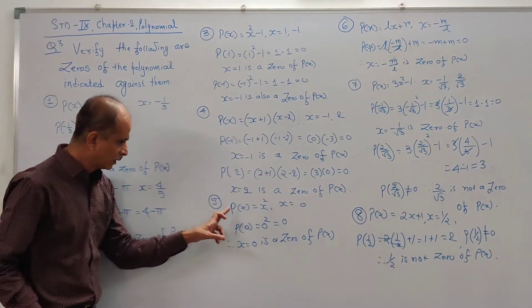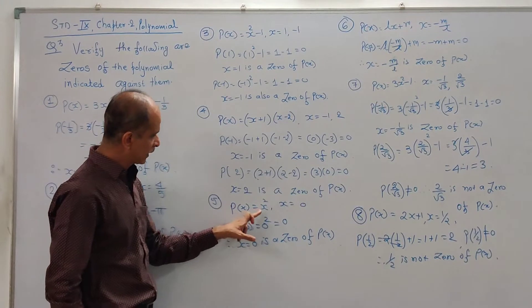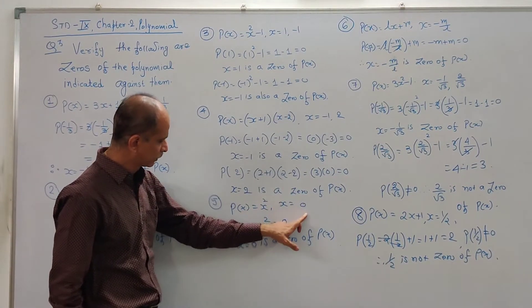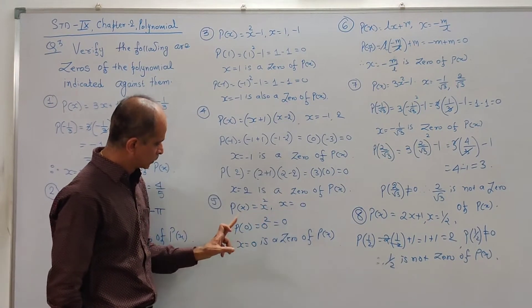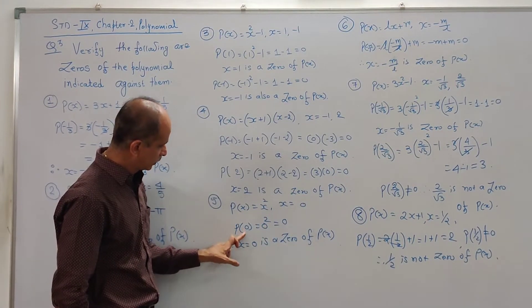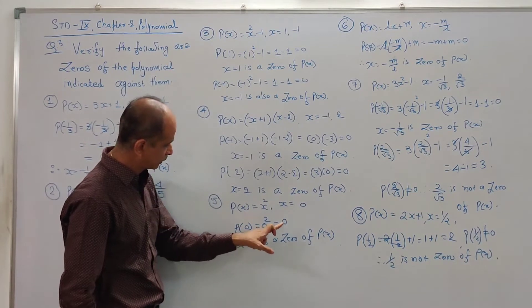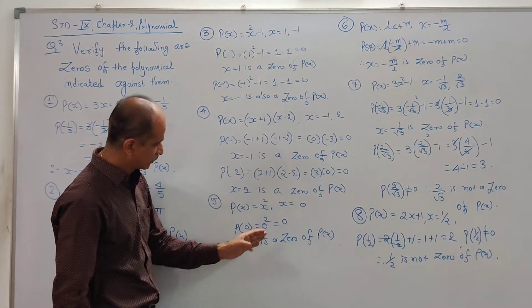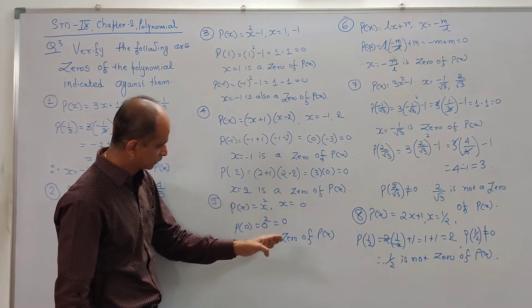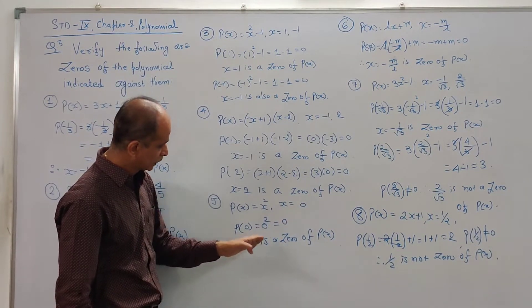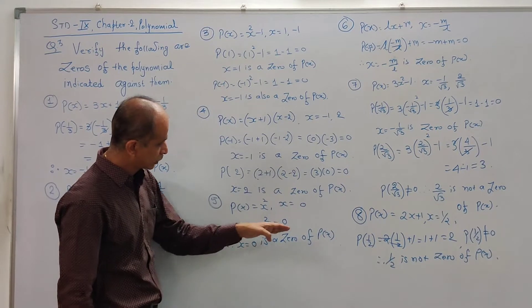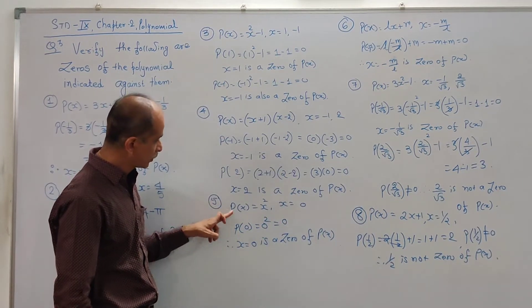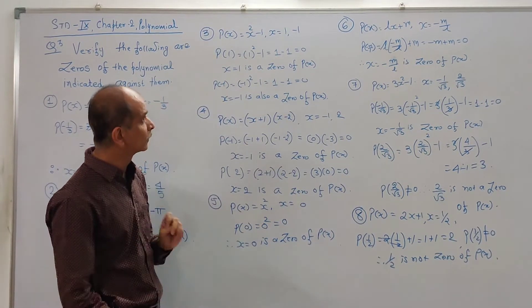Now P(x) = x², where x = 0. So P(0) = 0² = 0. The value of the polynomial is 0, and that's why x = 0 is a zero of this polynomial.